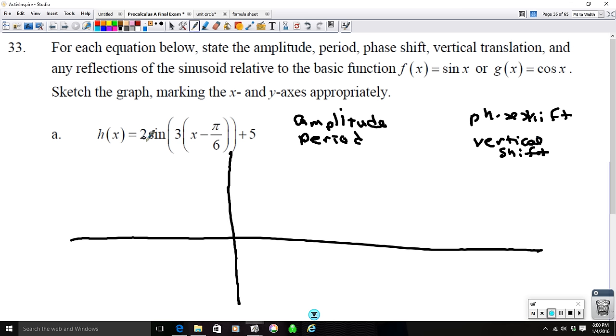So looking at this problem here, if A is equal to 2, that means that the amplitude is going to be equal to 2. So that's the absolute value of A. If B is equal to 3, then our period is going to be equal to 2 pi over 3.